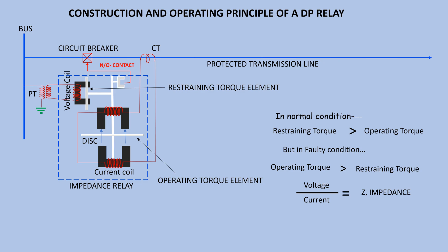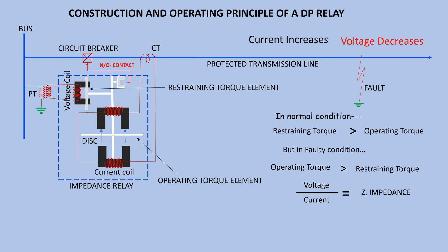During normal operating condition, the restraining torque of the voltage coil fed from PT is more than the operating torque by the current coil, hence relay contacts remain in open position. When a short circuit fault occurs in the transmission line, the current in the operating coil increases. The speed of operation of the relay depends upon the level of fault, that is the quantity of current in the operating coil. Speed of activation of relay is approximately proportional to the current in the operating coil, hence time of operation is inversely proportional to current.